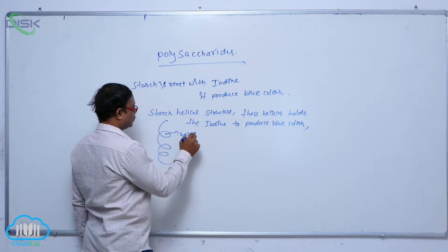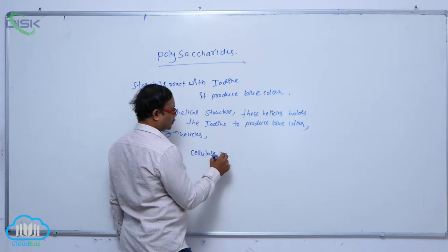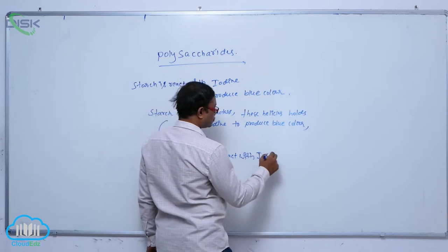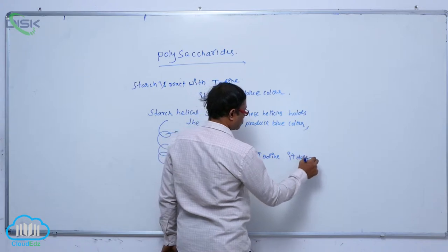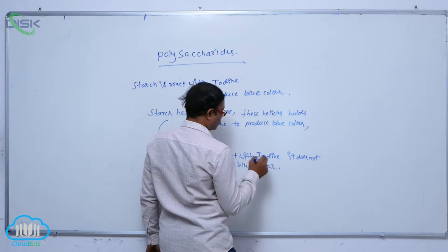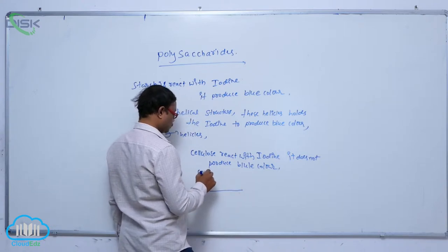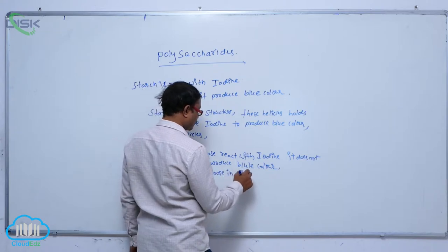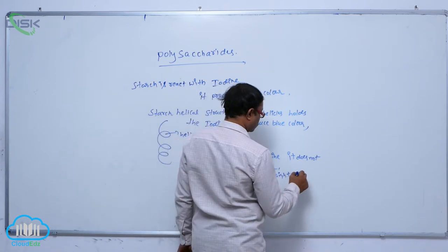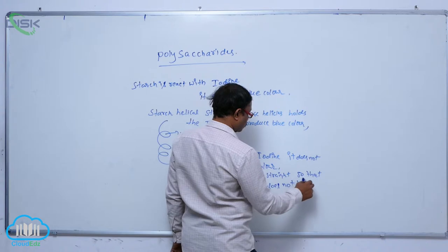These are the helicals. When cellulose reacts with iodine, it does not produce blue color. Because cellulose has a linear structure — cellulose is linear, straight — it does not hold that iodine.